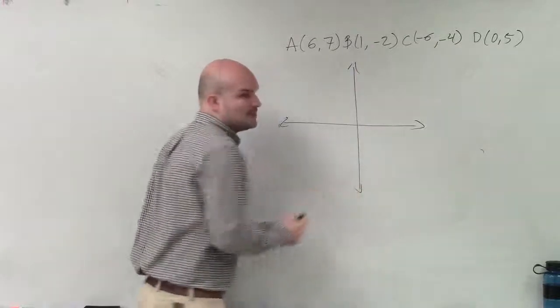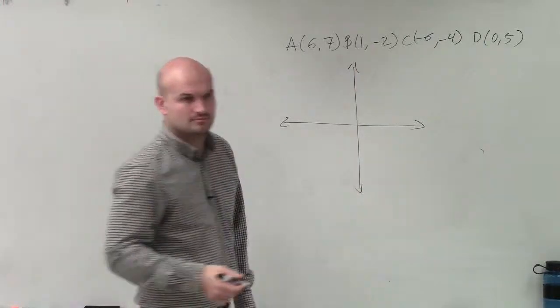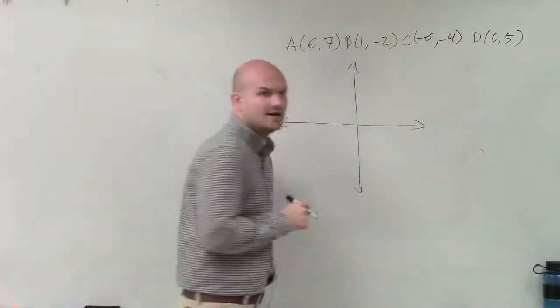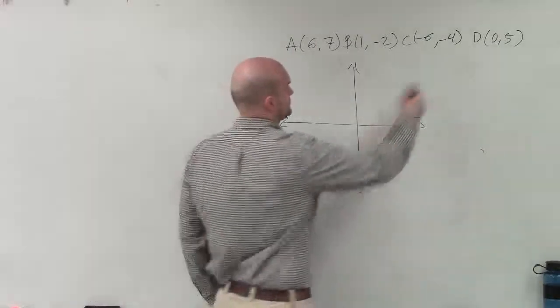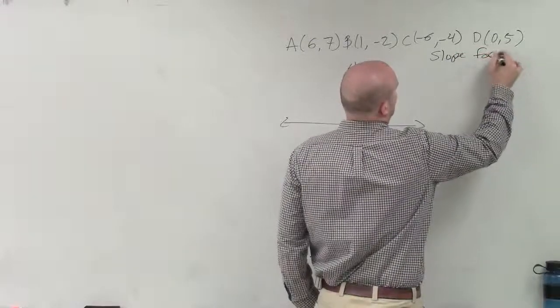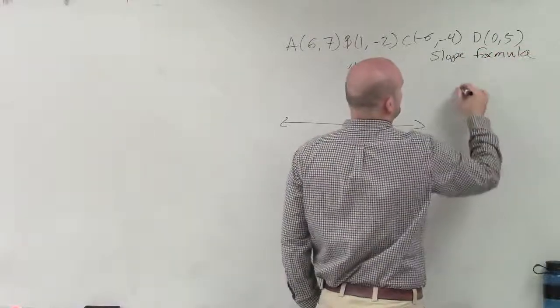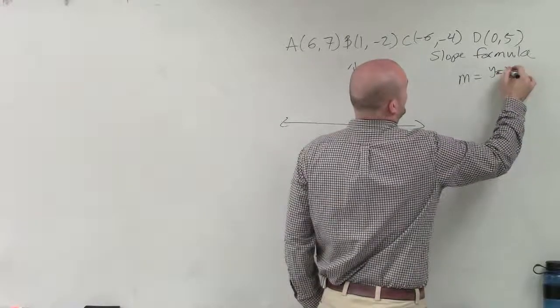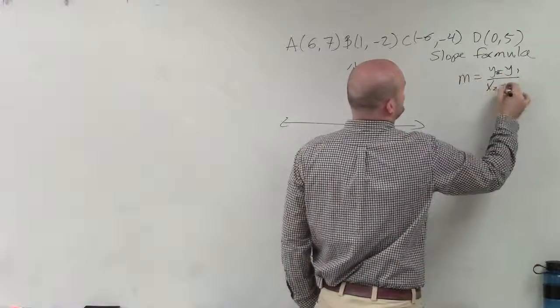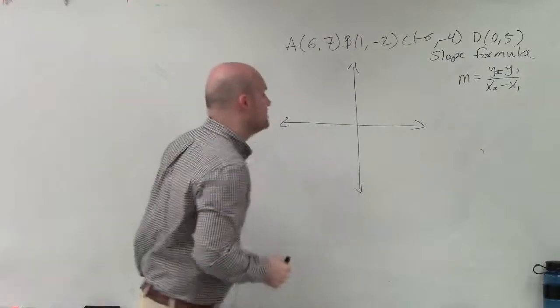Oh, and it said determine if it's a parallelogram by the slope formula, right? Question number nine, I believe. It says use the slope formula. And if you guys remember, the slope formula is m equals y2 minus y1 over x2 minus x1. All right, so we go ahead and label the points.